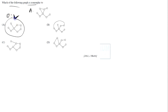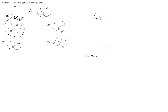You can find which graph is isomorphic and which is not quite easily. Whenever they ask about isomorphism, you should try to eliminate options. For example, in this question graph there is no cycle of three vertices, but in option A you can see there is a cycle of three vertices, so you can eliminate option A.